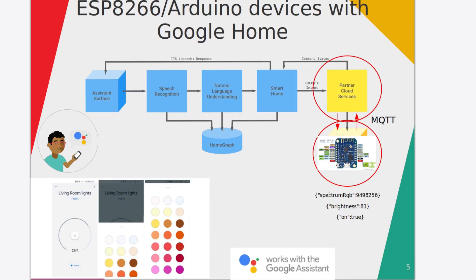For instance, when you change color you are going to receive this message — Spectrum RGB and the code. And then it's up to your code in Arduino to act on this. Also brightness and on and off commands. So in this way you can control by ESP8266, Wemos, Arduino — any type of device that has MQTT implemented — to control the LED strip or LED lights.